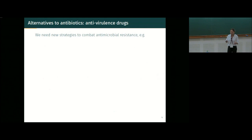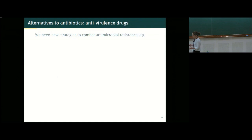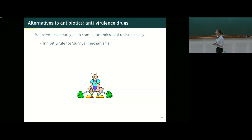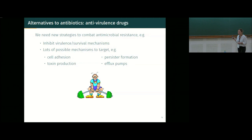We need new strategies to combat antimicrobial resistance. There are lots of people still looking for new classes of antibiotics and making old antibiotics more effective. I also work alongside microbiologists trying to develop a new type of treatment called anti-virulence drugs. Instead of directly killing bacteria, these inhibit the virulence or survival mechanisms of bacteria — weakening them, preventing them from causing infection, and enabling the host immune system to clear the infection.